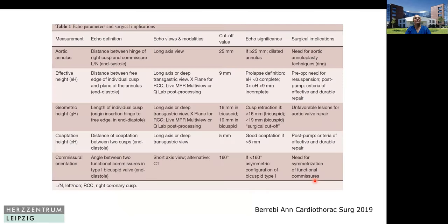Here are the recommendations and parameters you can use per the guidelines regarding effective height, the surgical implications, and what to do. Coaptation height after repair should, if possible, be more than five millimeters in each of the cusps.